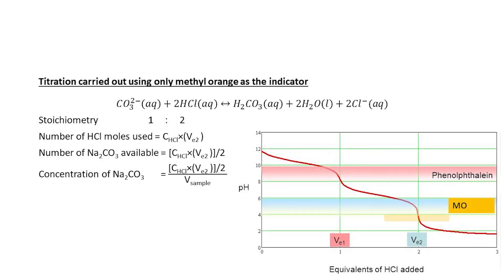In the experiment, sodium carbonate was titrated with HCl first using phenolphthalein, and then methyl orange was added to the same flask. You can also carry out the titration by adding only methyl orange to the sodium carbonate sample. When methyl orange is the only indicator, sodium carbonate reacts with 2 moles of HCl, giving carbonic acid, 2 moles of water, and 2 sodium chloride ions. The stoichiometry between sodium carbonate and HCl is 1 to 2.